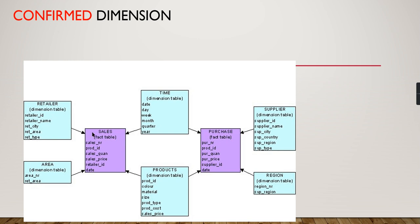Here we have a star schema design where Sales and Purchase are two fact tables, surrounded by different dimension tables. For Sales: retailer, area, time, and products. For Purchase: time, products, supplier, and region. Notice there are common dimensions between these two fact tables. The definition of a conformed dimension is: if a dimension is used in more than one subject area or more than one fact table, it is called a conformed dimension.